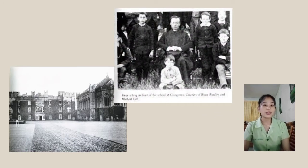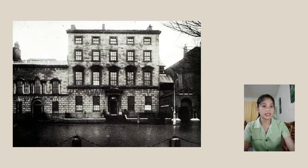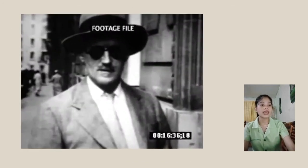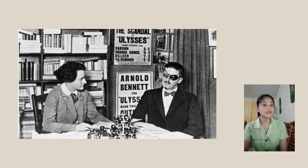Joyce went to G-Soot School followed by University College in Dublin where he began publishing essays. After graduating in 1902, Joyce went to Paris with the intention of attending medical school. Soon afterward, however, he abandoned medical studies and devoted all of his time to writing poetry, stories, and theories of aesthetics.